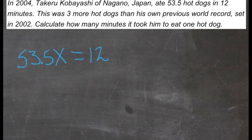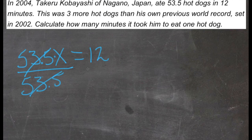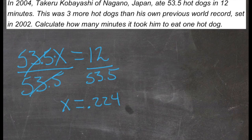So all we need to do is get rid of the 53.5, which is being multiplied by our variable. So we'll divide both sides by 53.5. That'll cancel. Divide this by 53.5. 12 divided by 53.5 is 0.224. So the time per hot dog, x, is 0.224 minutes.